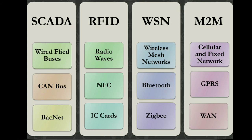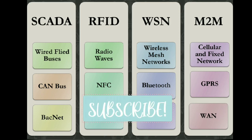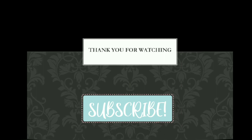In summary, M2M uses cellular and fixed networks and supports GPS and WAN. WSN uses wireless mesh networks, Bluetooth, and ZigBee. RFID supports radio waves, NFC, and IC cards. SCADA uses wired field buses such as CAN bus and BACnet.